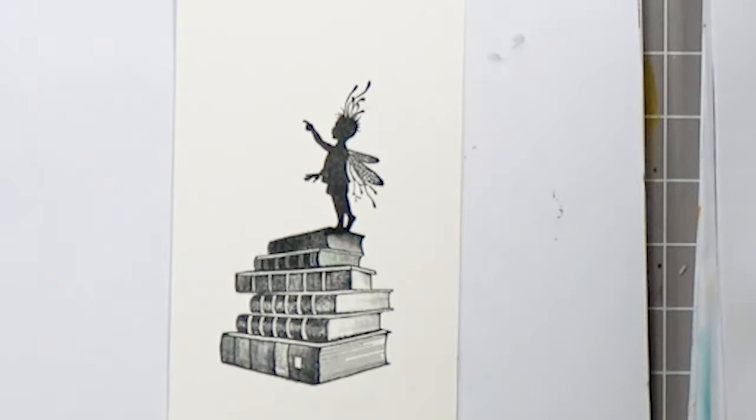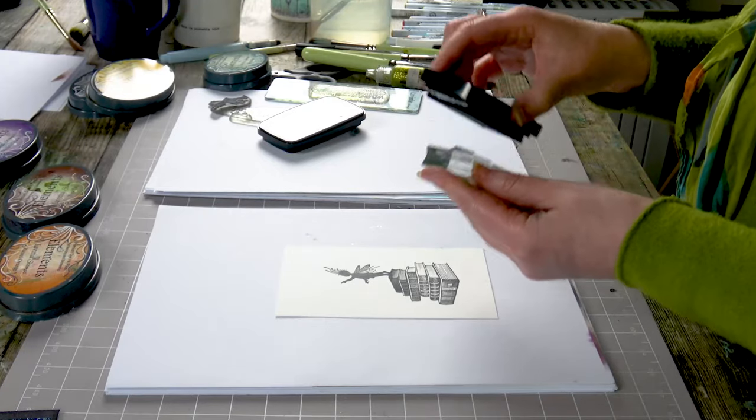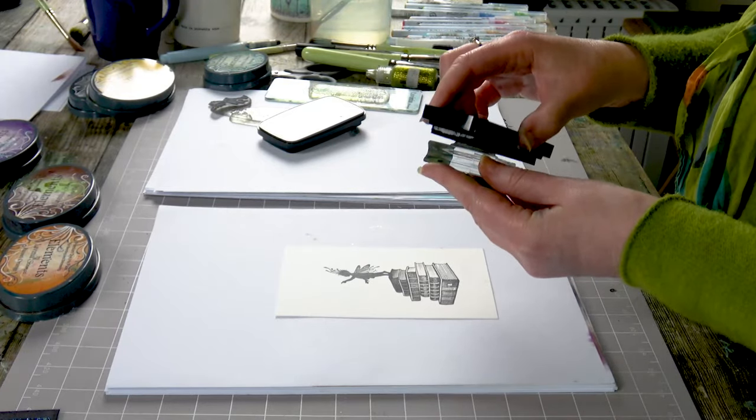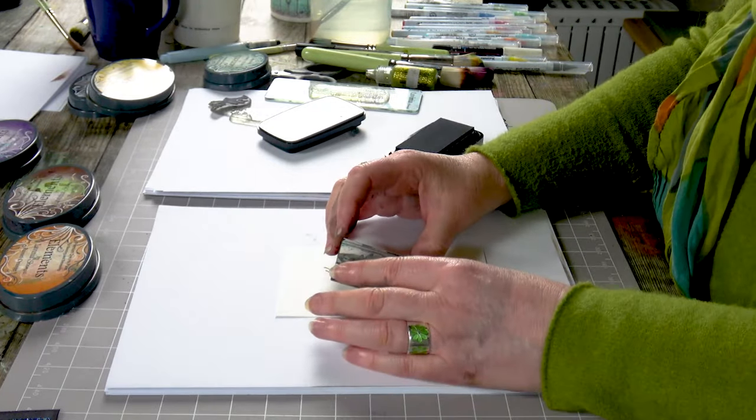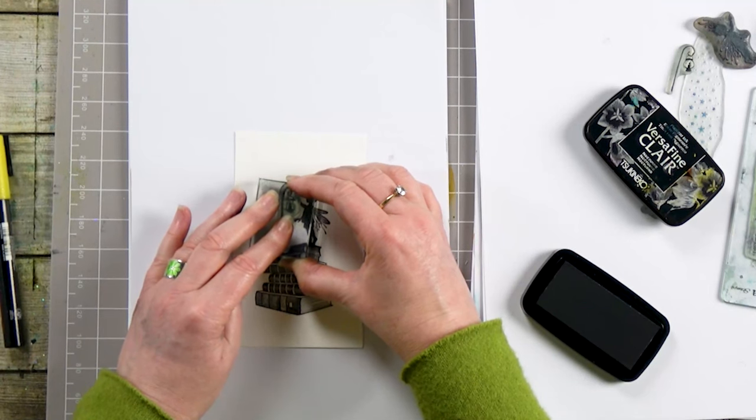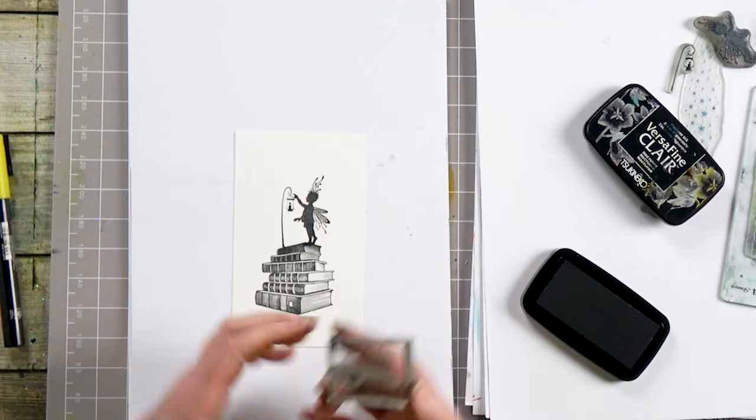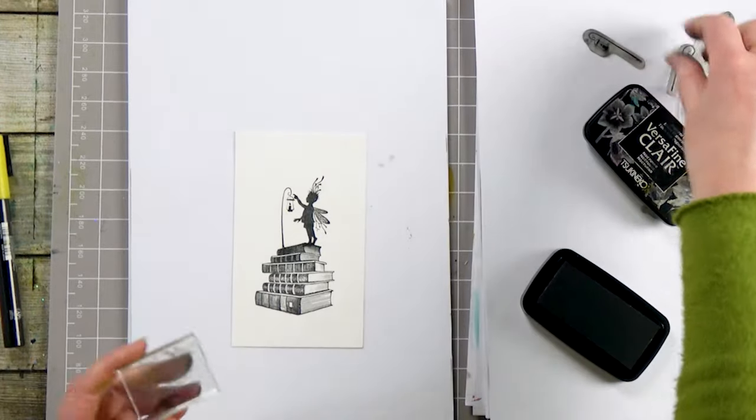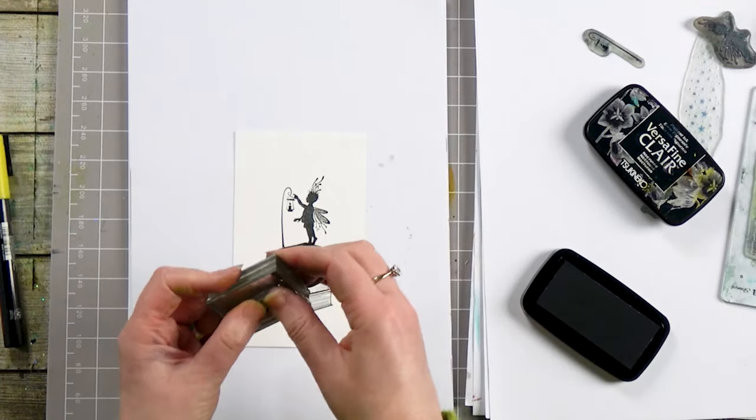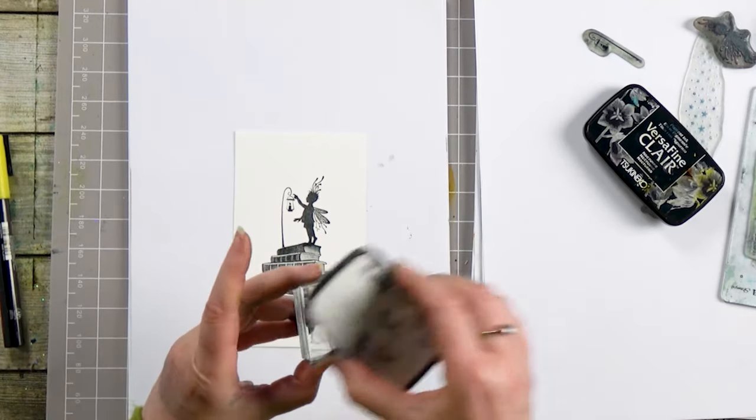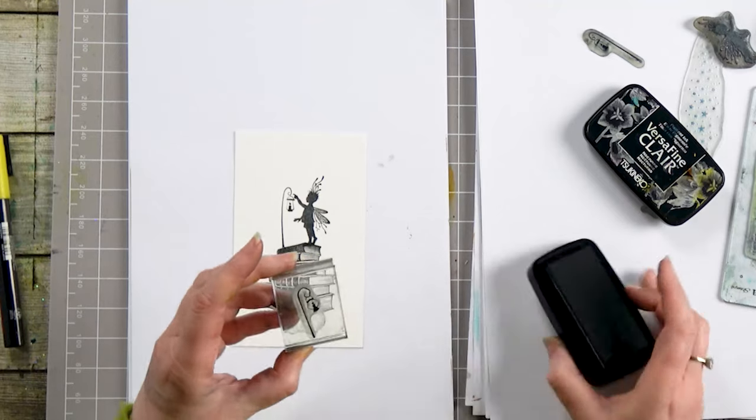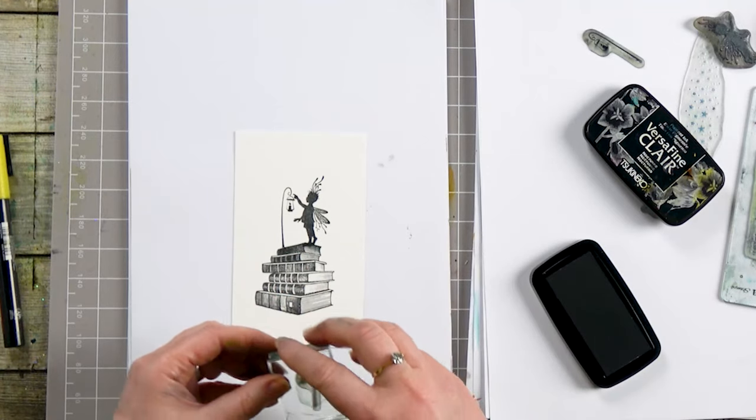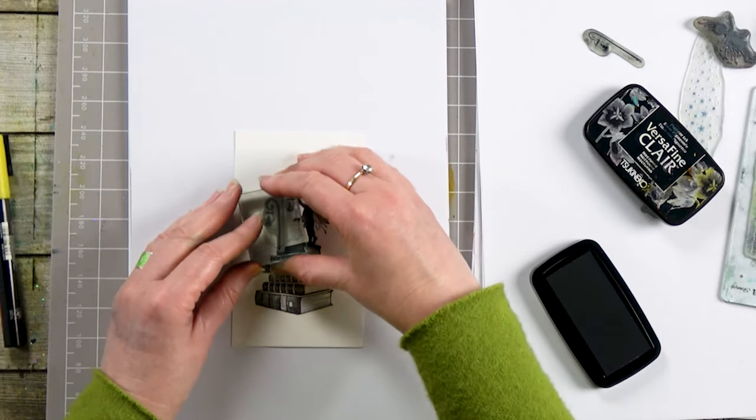And then I've got some little lamps and I'm going to use the Nocturne again. Tiny little stamps, one one way, and we've got a lamp going the other way. And I'm going to pop that right next to it.